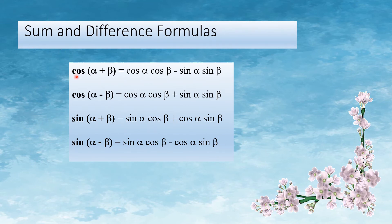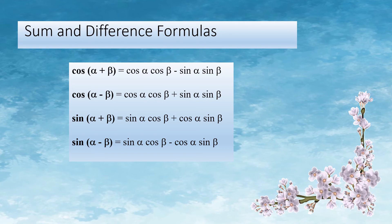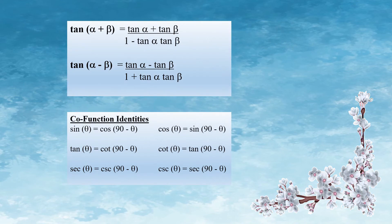Sum and difference formulas: cos(alpha + beta) = cos alpha cos beta minus sin alpha sin beta. cos(alpha minus beta) = cos alpha cos beta plus sin alpha sin beta. sin(alpha + beta) = sin alpha cos beta plus cos alpha sin beta. sin(alpha minus beta) = sin alpha cos beta minus cos alpha sin beta. tan(alpha + beta) = (tan alpha + tan beta) divided by (1 minus tan alpha tan beta). tan(alpha minus beta) = (tan alpha minus tan beta) divided by (1 plus tan alpha tan beta).